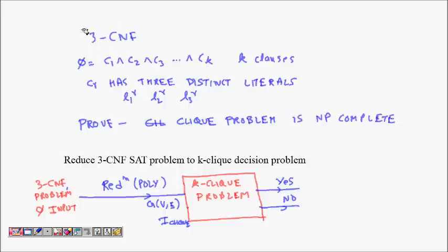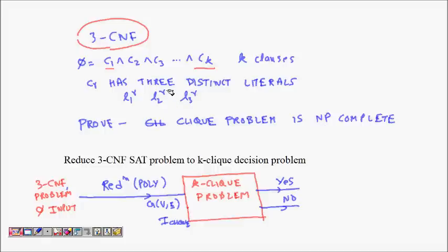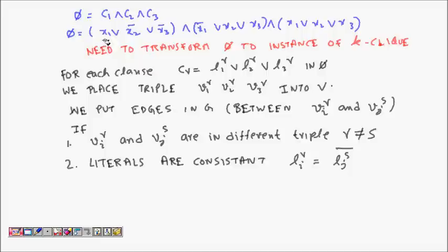Now we will reduce the 3-CNF SAT problem, which is already known to be NP-complete, to the k-CLIQUE problem. 3-CNF SAT is a circuit satisfiability problem where you have a formula φ = C1 ∧ C2 ∧ ... ∧ Ck with k clauses, and in each clause there are three literals OR-ed together, of the form l1r ∨ l2r ∨ l3r.